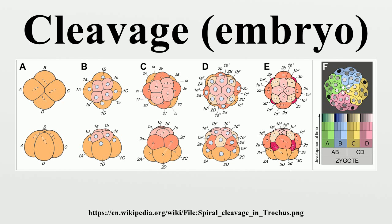At the four-cell stage, the A and C macromeres meet at the animal pole, creating the animal cross-furrow, while the B and D macromeres meet at the vegetal pole, creating the vegetal cross-furrow. With each successive cleavage cycle, the macromeres give rise to quartets of smaller micromeres at the animal pole. The divisions that produce these quartets occur at an oblique angle — not a multiple of 90 degrees — to the animal-vegetal axis. Each quartet of micromeres is rotated relative to their parent macromere, and the chirality of this rotation differs between odd and even-numbered quartets, meaning there is alternating symmetry between them.